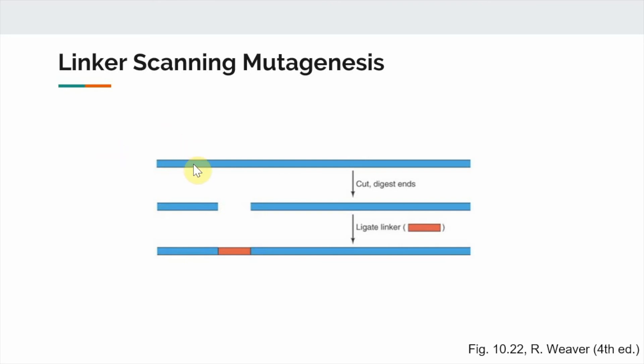This technique is performed by cutting each DNA molecule once and chewing back the ends. We can then ligate in a small linker sequence to fill the gap. By doing this in multiple places across the DNA, we can end up with a library of DNAs with the linker in various places throughout, which allows us to scan across the length of the DNA to find which areas are important for transcription.